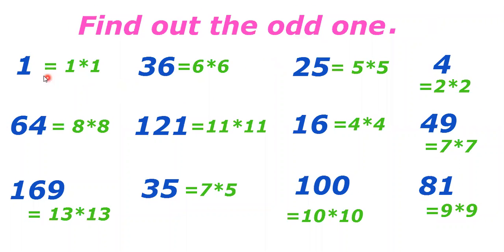So the solution is: 1 we can write as 1 into 1, 36 as 6 into 6, 25 as 5 into 5, 4 as 2 into 2, 49 as 7 into 7, 16 as 4 into 4.